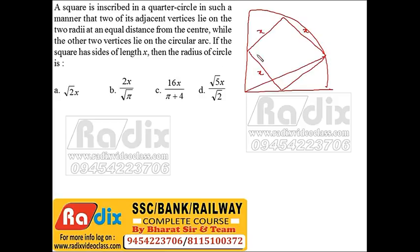It is given that two of its adjacent vertices lie on the two radii at equal distance, means this distance and this distance are equal. So this angle would be 45°, this would be 45°, this would be 45°. Now this is 90°, this would also be 45°. Now join this.